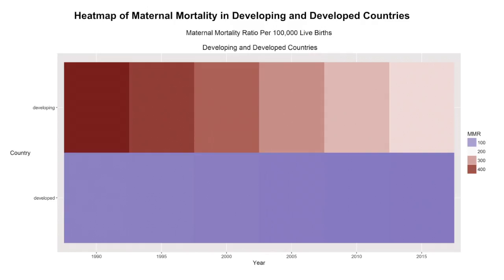This is a heat map showing the same data in a different form. The developed countries stayed at a pretty low maternal mortality ratio from the beginning, with some improvement seen in the slightly darker hues of purple towards the end of the MDG period. However, there was drastic improvement in developing countries over the 25-year period.